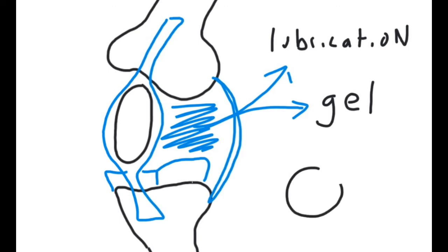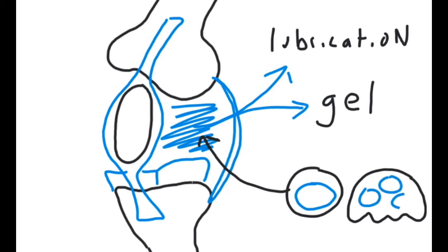In tenosynovial giant cell tumors, the synovial cavity is full of cells instead of synovial fluid. These cells resemble monocytes and another cell type, osteoclasts. It turns out that CSF1 is not only necessary for the production of monocytes from those stem cells, but also osteoclasts.